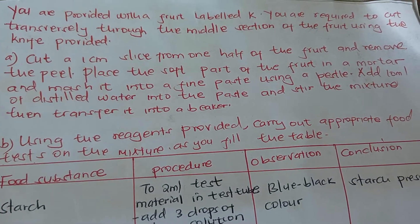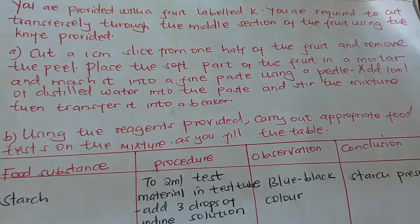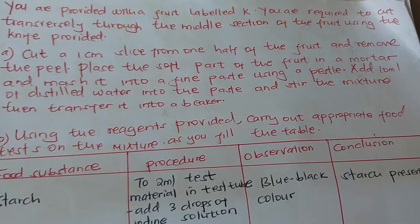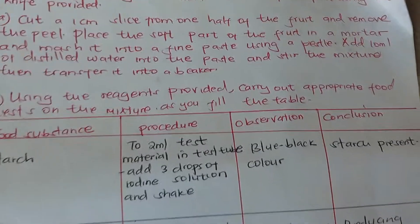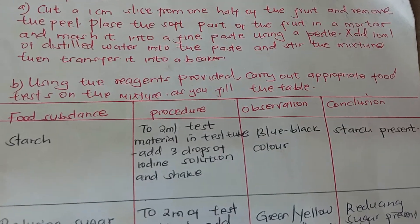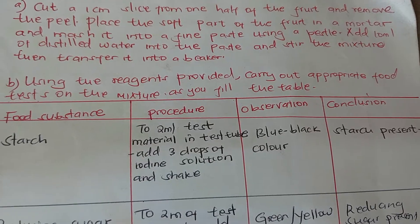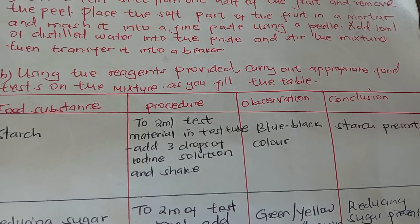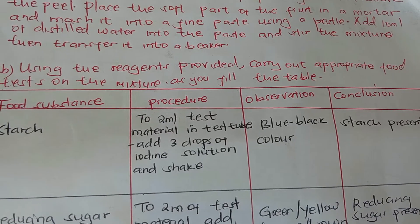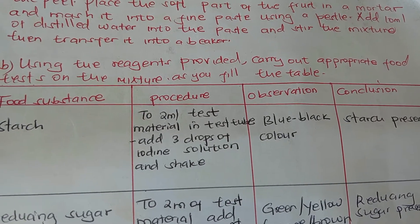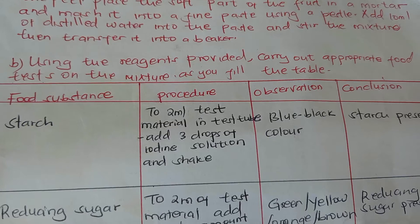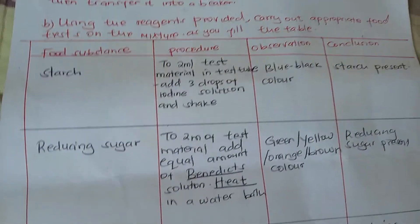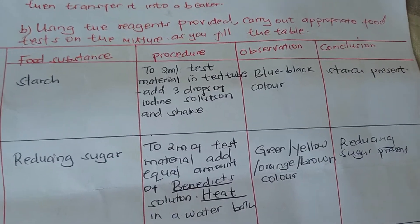You are provided with a fruit. You are required to cut the fruit transversely through the middle section using a knife, then cut a one-centimeter slice from the half of the fruit and remove the peel. Place the soft part into a mortar and mash it into a fine paste using a pestle. Add 10 ml of distilled water into the paste and stir.